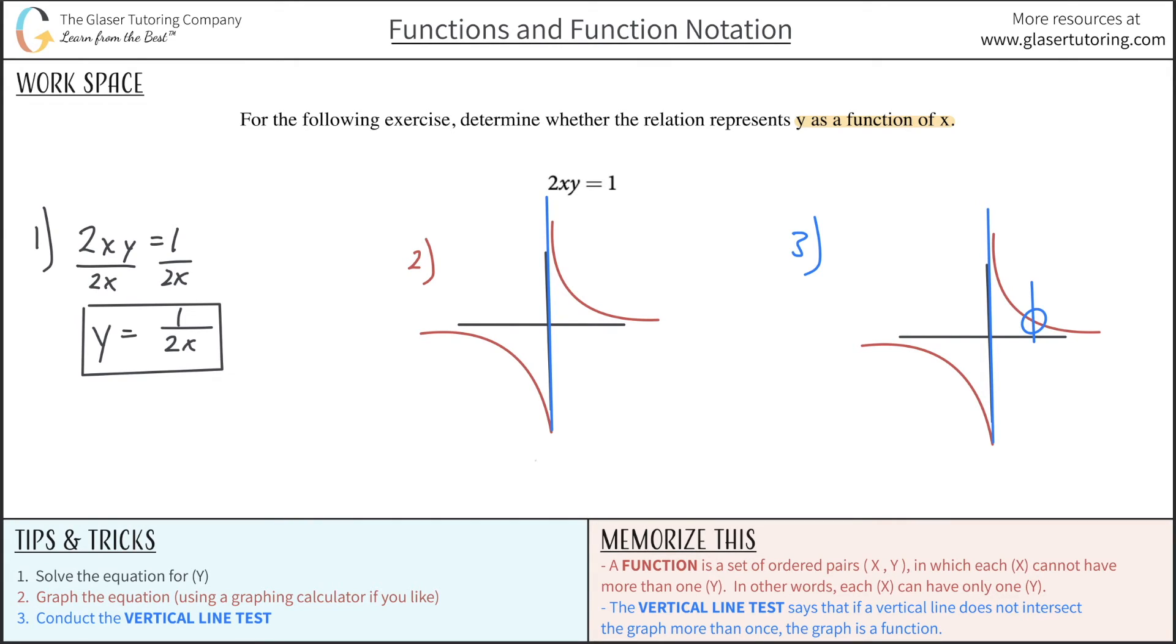And down here on the bottom, where it says, the vertical line test says that if a vertical line does not intersect the graph more than once, then it is a function. So this test proves that it is a function. And for this specific equation that was given, it is indeed a function.